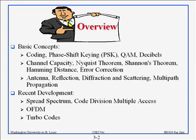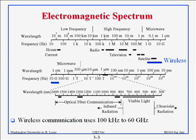Some of the recent developments in physical layer include spread spectrum, code division multiple access, OFDM, and turbo codes. There are lots of new words here, but they will all become clear as we go along. Before we get into any of these, first thing we have to understand is the spectrum.